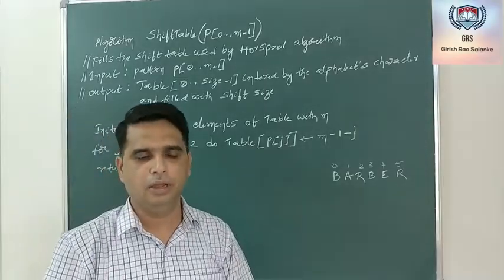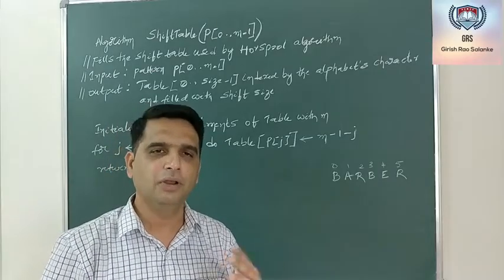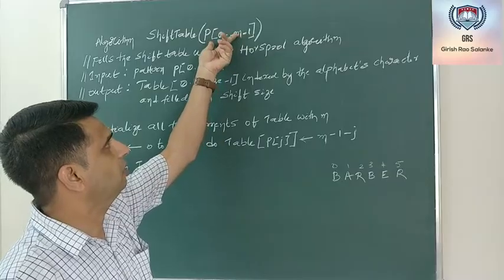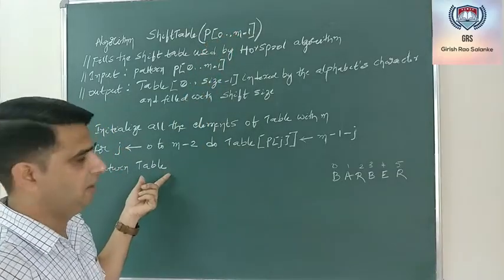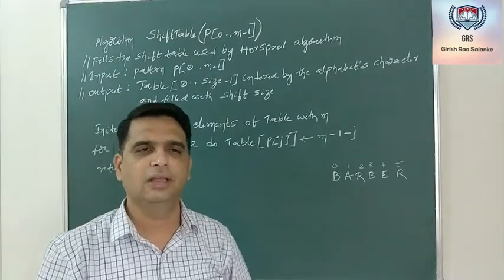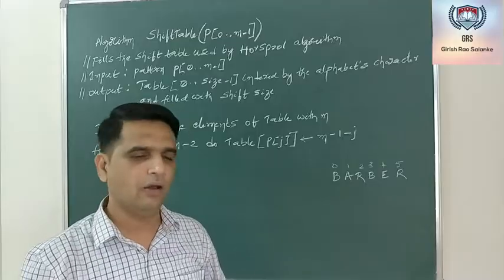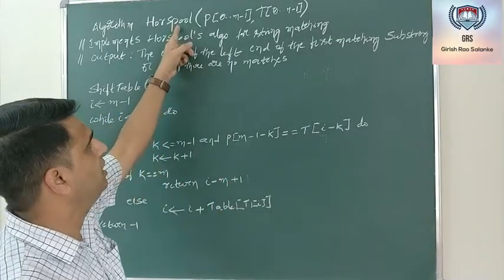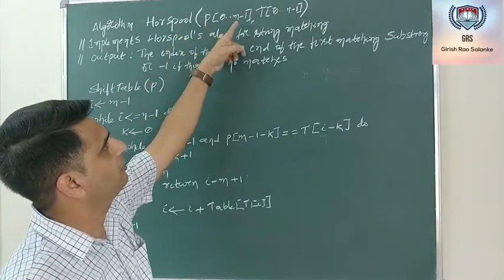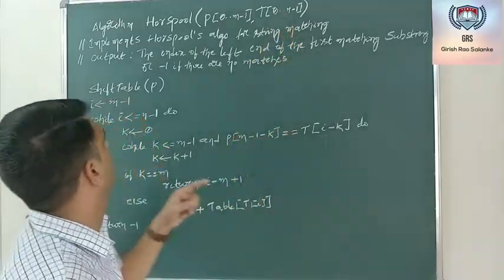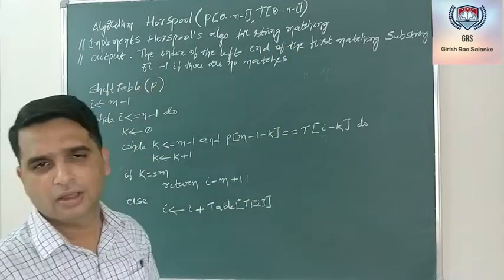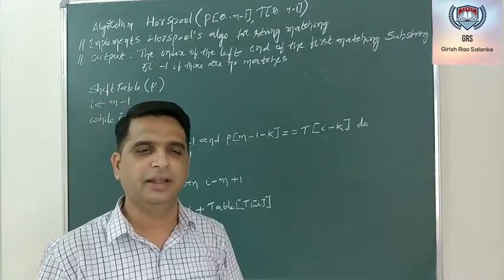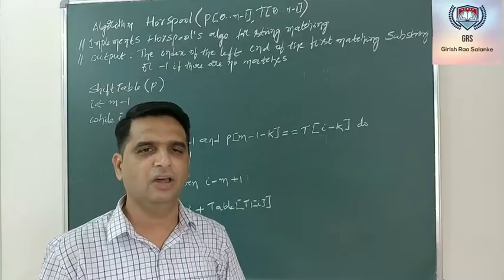This preprocessing builds the shift table from the pattern P. Now let's go for the Horspool string matching algorithm. The input is pattern P of size m and text T of size n. The output is the index of the left end of the first matching substring, or minus 1 if there is no match.